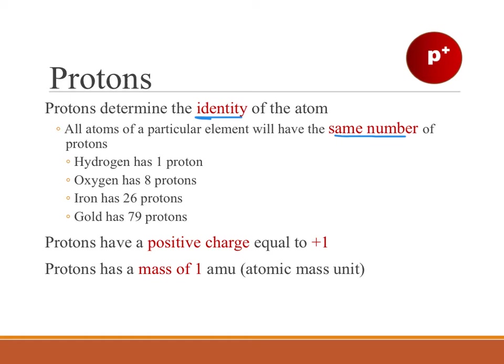For example, hydrogen has one proton, oxygen has eight protons, iron has 26 protons, and gold has 79 protons.